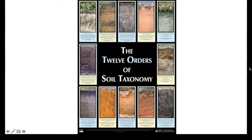Aridisols are soils that occur in climates that are pretty dry. They can contain and accumulate salt, gypsum, and carbonates. They're usually found in hot and cold deserts worldwide and occupy about 12% of the Earth's glacier-free land area.